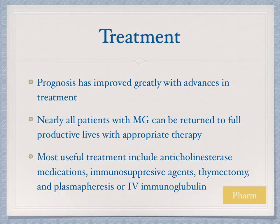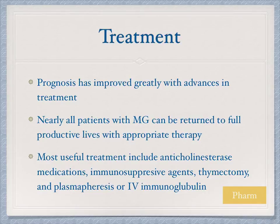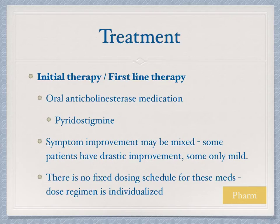Myasthenia gravis is a treatable disease, and patients are living longer with a pretty good prognosis given current treatment options. Nearly all patients can be returned to normal functioning lives with appropriate therapy. Typical therapies include acetylcholinesterase medications, immunosuppressive agents, thymectomy, plasmapheresis, or IVIG. The first-line therapy is always an oral acetylcholinesterase medication — specifically pyridostigmine.